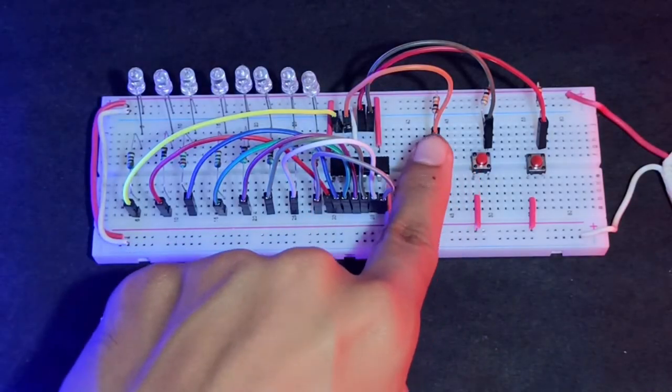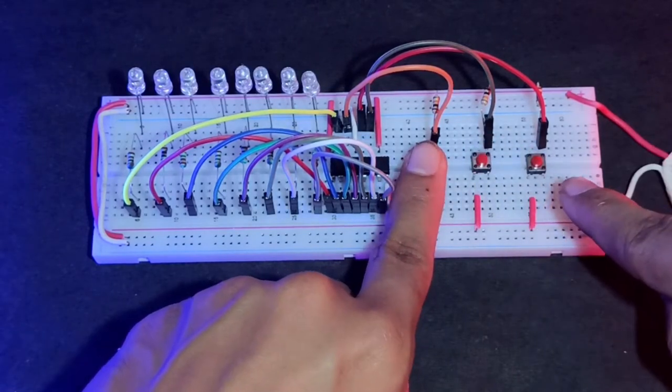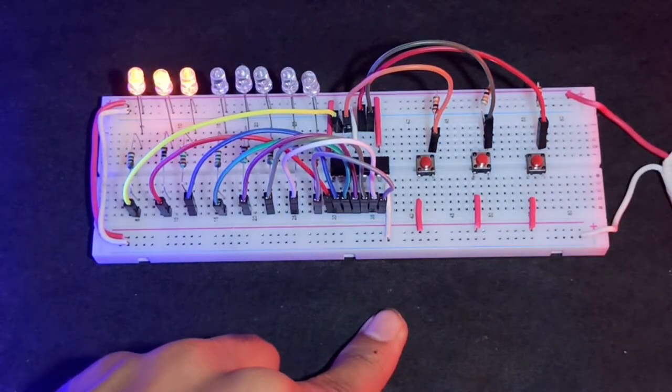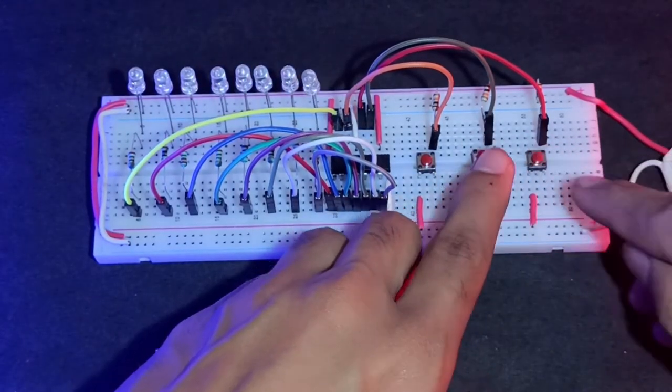Now hold the data button. After that, press the clock button three times and press the latch button. Now three LEDs are on. How many times you press the clock button determines the count of LEDs on and off.